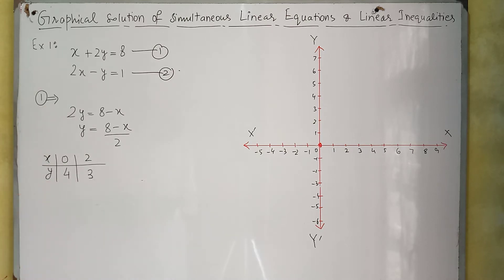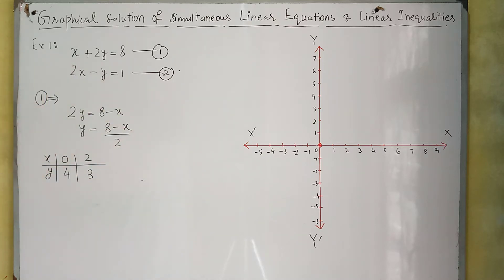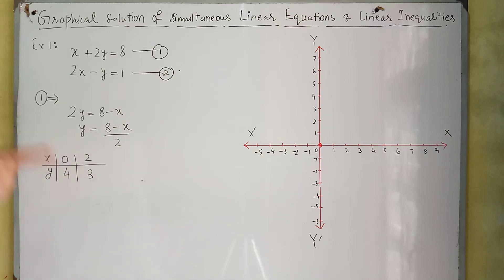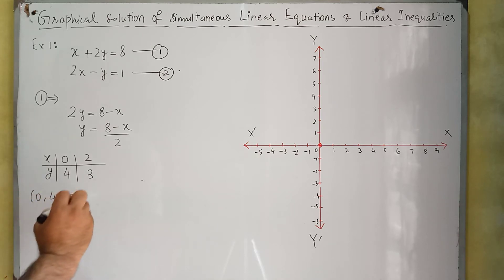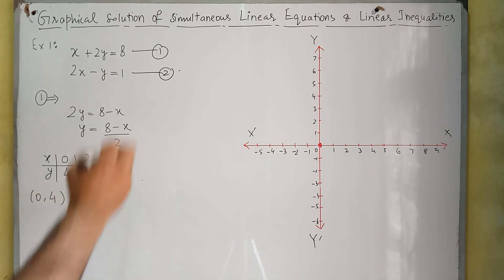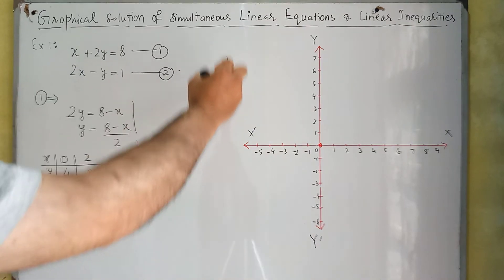Because it is a straight line, we need to find only two coordinates. In case of a quadratic or cubic equation we would need 3, 4, 5, or 6 coordinates. But since this is a straight line, two coordinates are enough. For equation 1, we have two coordinates: (0, 4) and (2, 3).